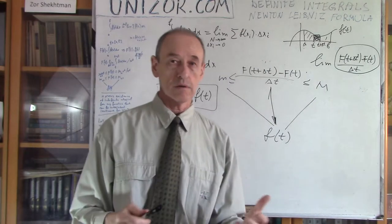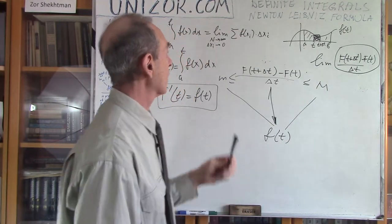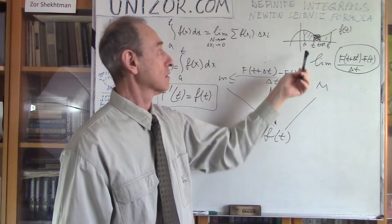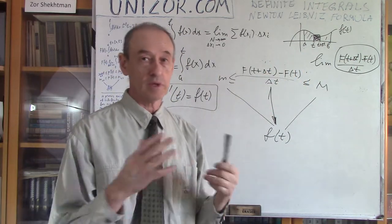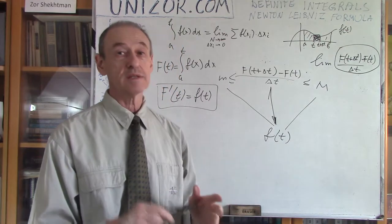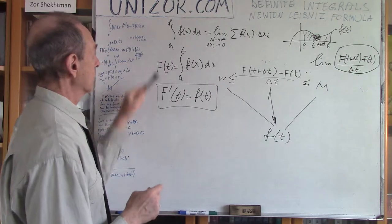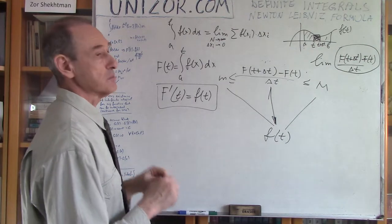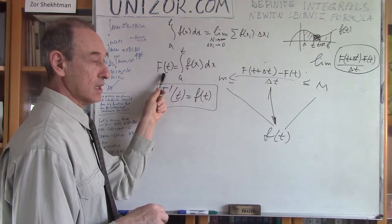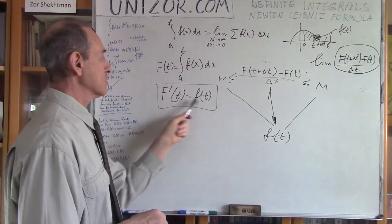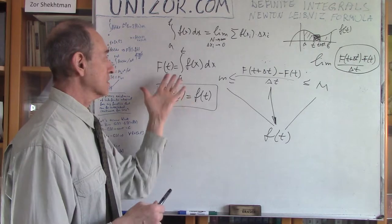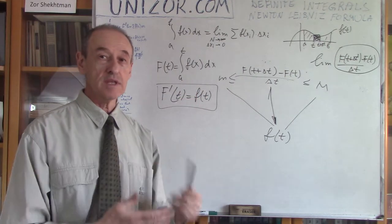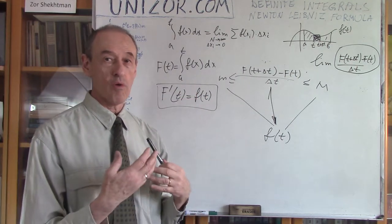An important observation: for any continuous function f(t), we know there is always a definite integral — we've proven existence and uniqueness of that limit of sums. What this means is that for any continuous function, there exists a function whose derivative equals our function — that is, there is always an indefinite integral or antiderivative. Continuous functions always have these indefinite integrals.